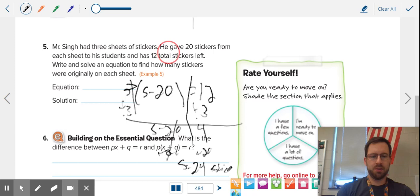Stickers per sheet. Let's check it to make sure it makes sense. 24 minus 20 is four. Four times three is 12.